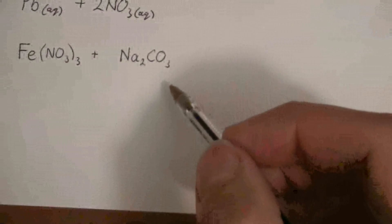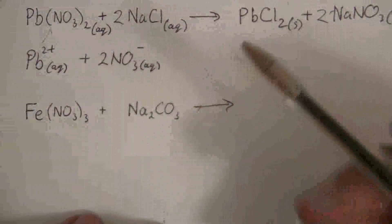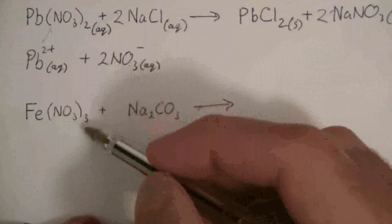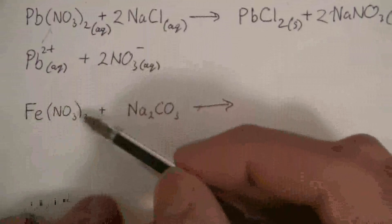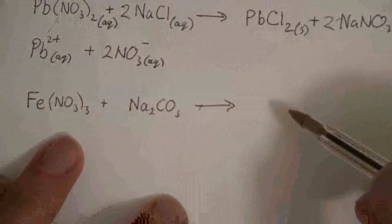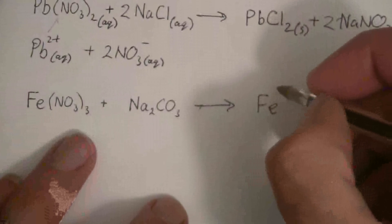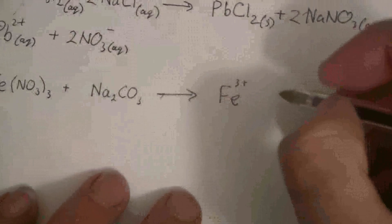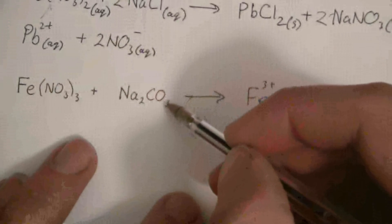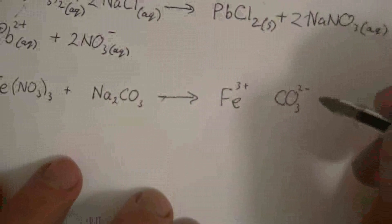The last equation of this problem is iron(III) nitrate. Nitrate is negative one, and I have 3 of them this time, so that's negative three from those three nitrates, making iron a positive three to balance to zero. Even though iron can be either positive two or positive three, we always leave it the same unless told otherwise. So this is iron with a positive three charge.